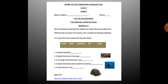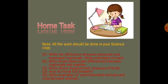Now students, solve worksheet number three. For homework, all work should be done in your journal science copy. Question one: write the difference between placental and marsupial mammals with examples. Question two: write three main differences between mammals and reptiles. Question three: write the characteristic features of birds. Question four: how do most fish breathe? Question five: write examples of warm-blooded and cold-blooded animals.